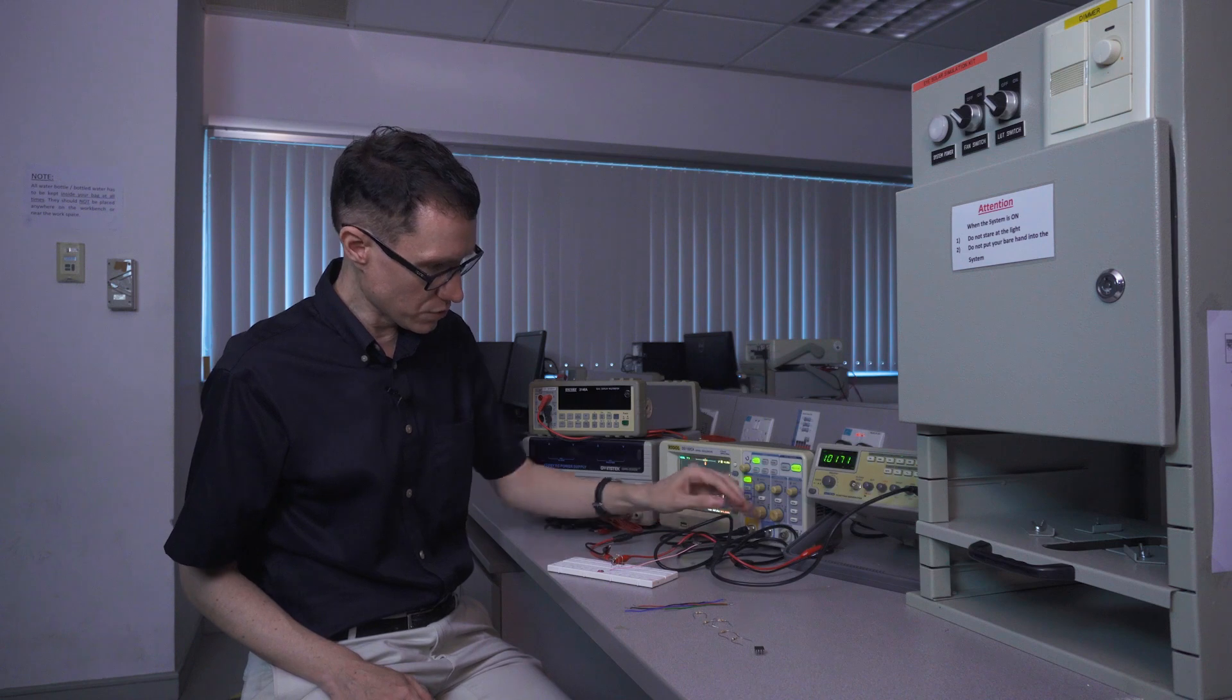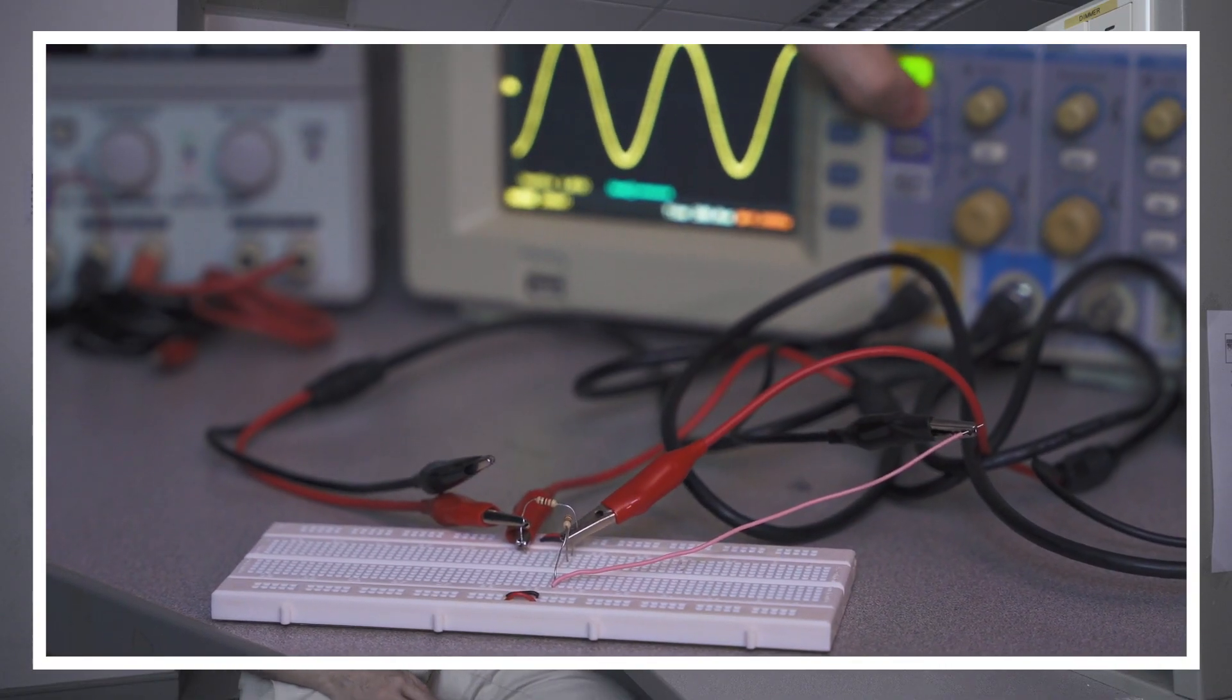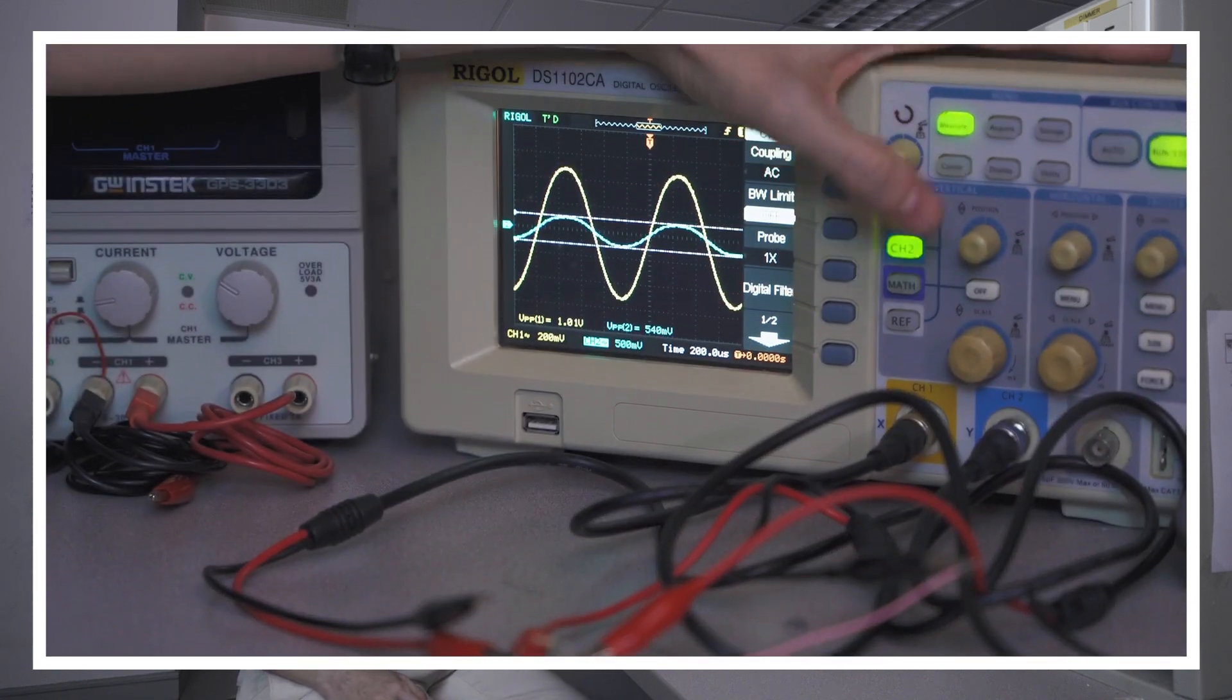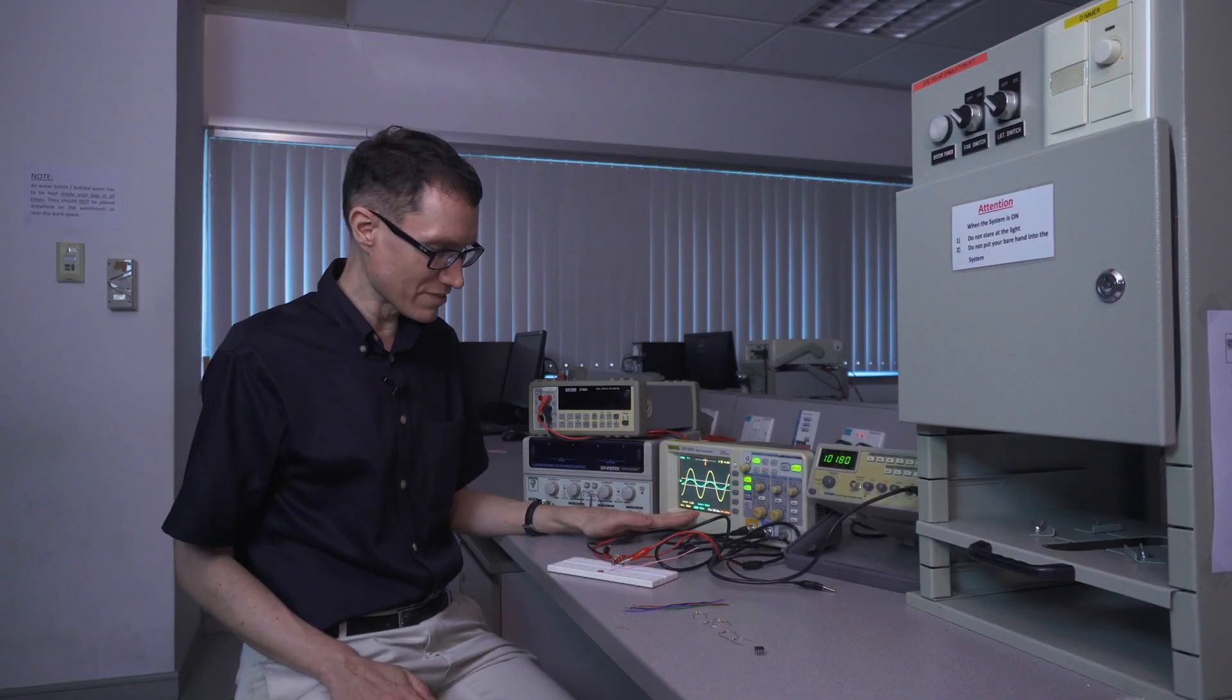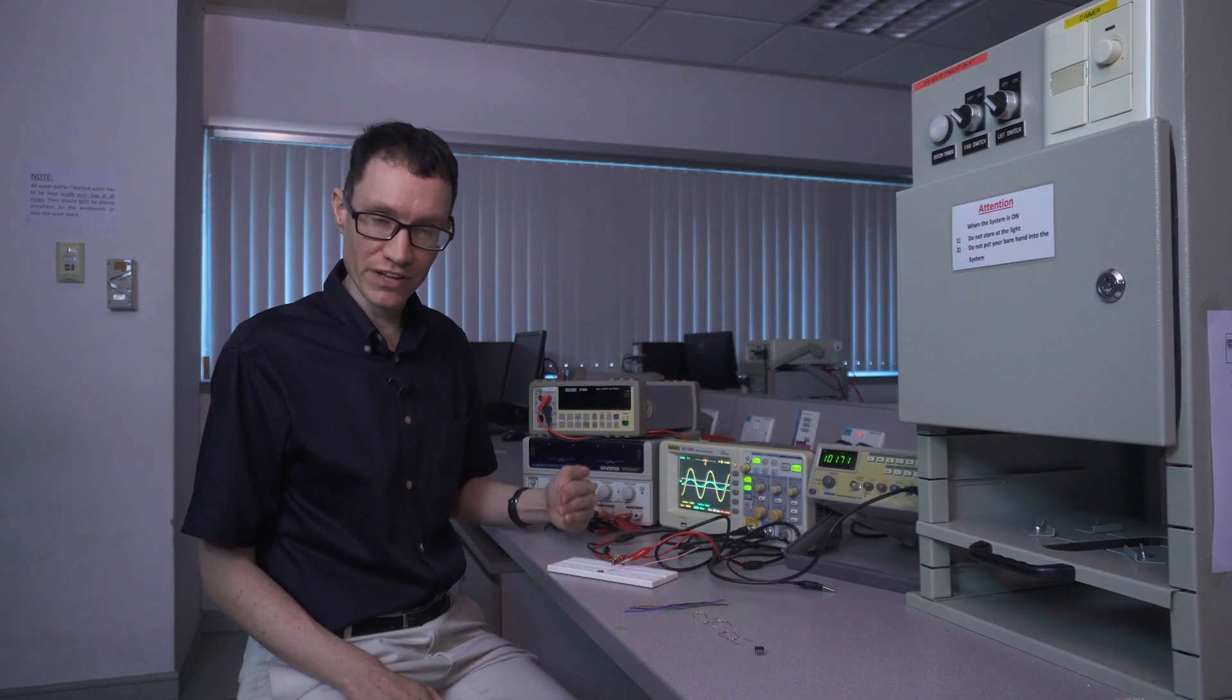Let's use channel 2 to take a look at the signal across the load resistor. We're seeing a 0.5 volt signal across the load resistor. Of course the voltage is going to decrease because we've set up a voltage divider.